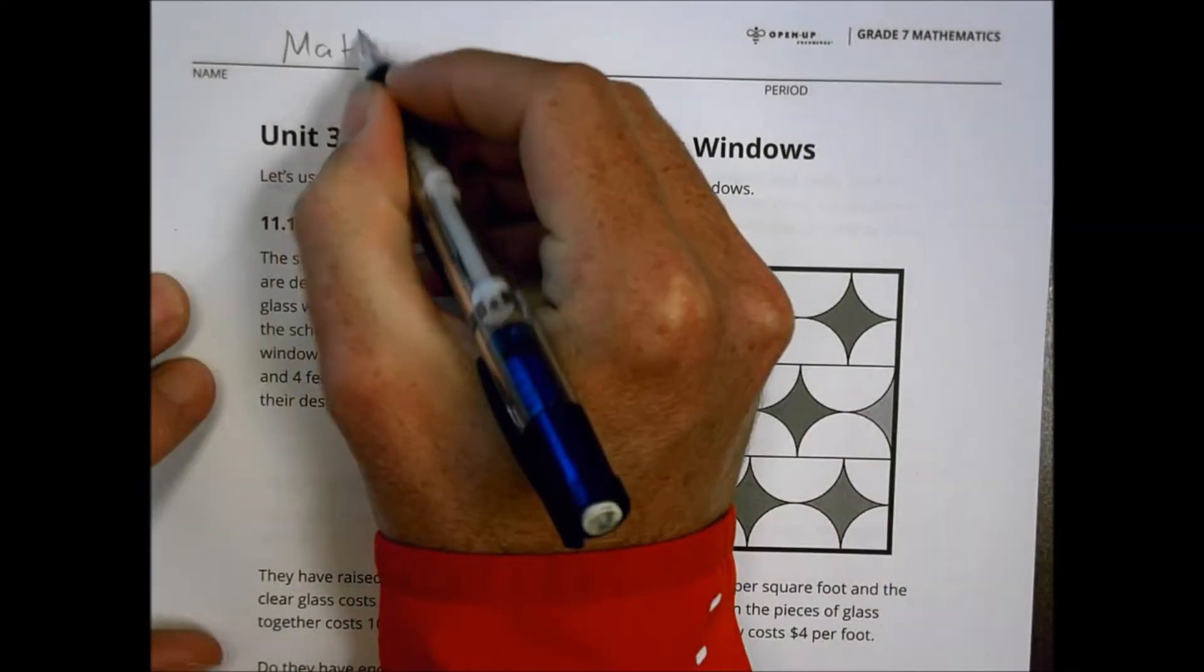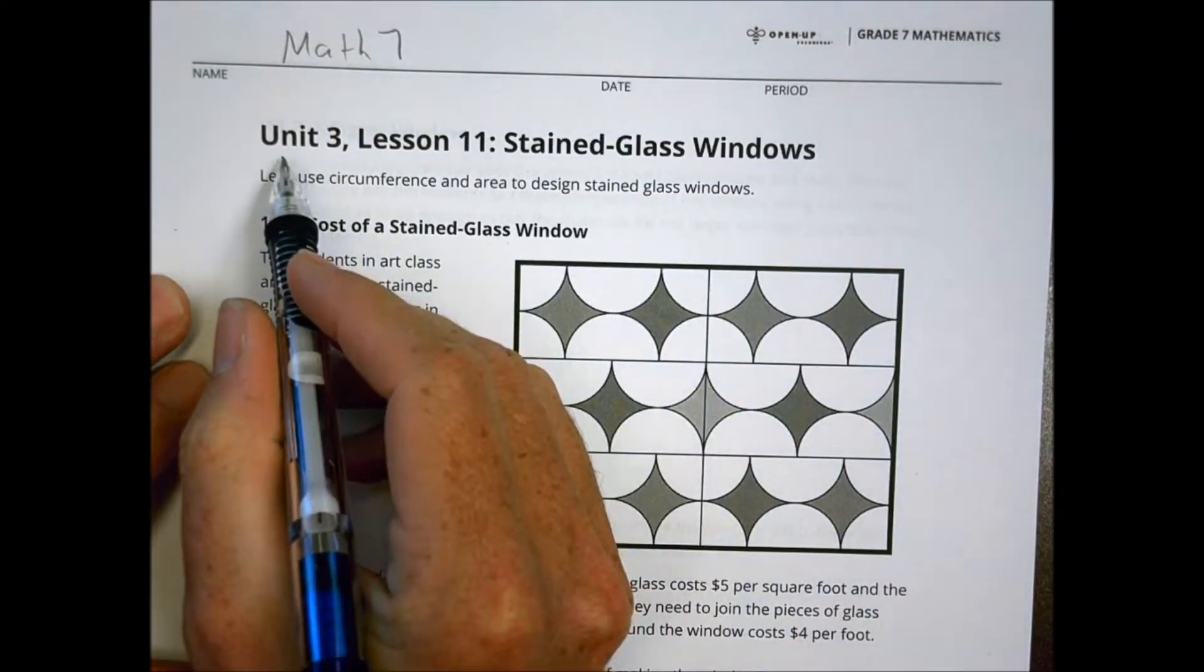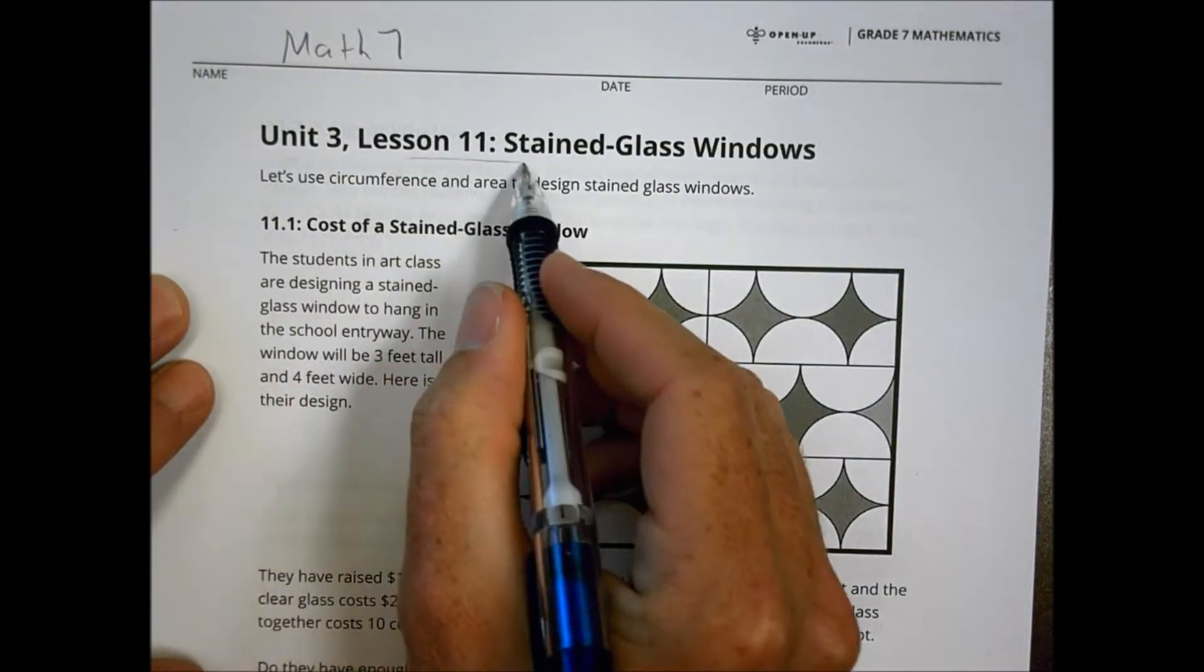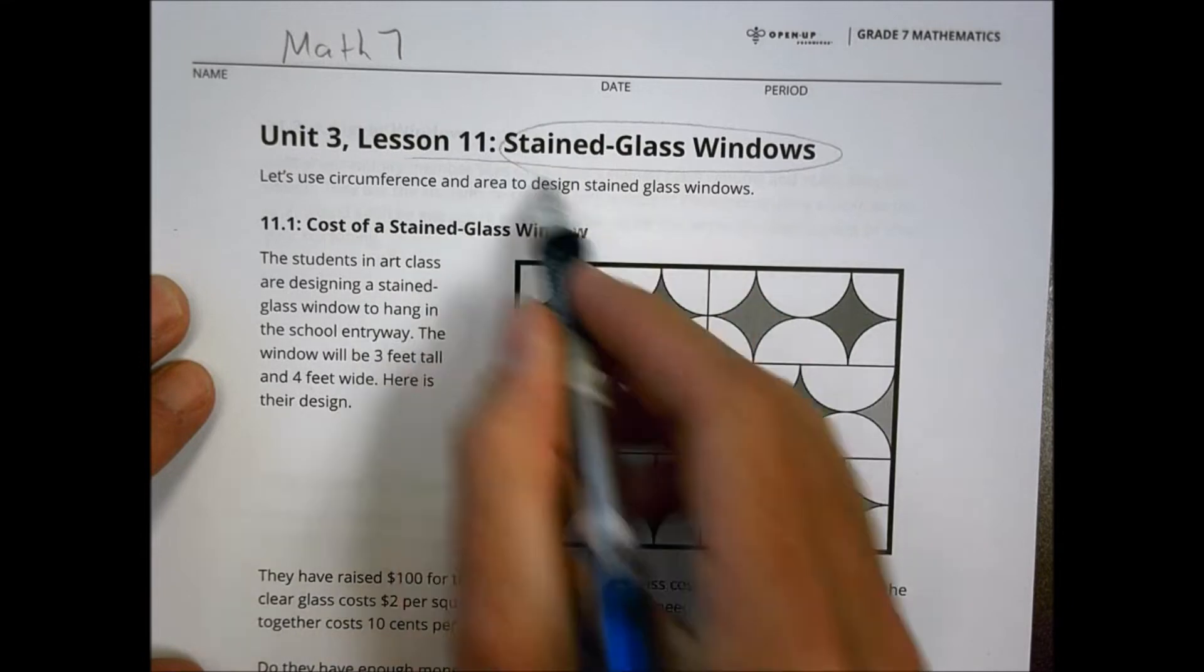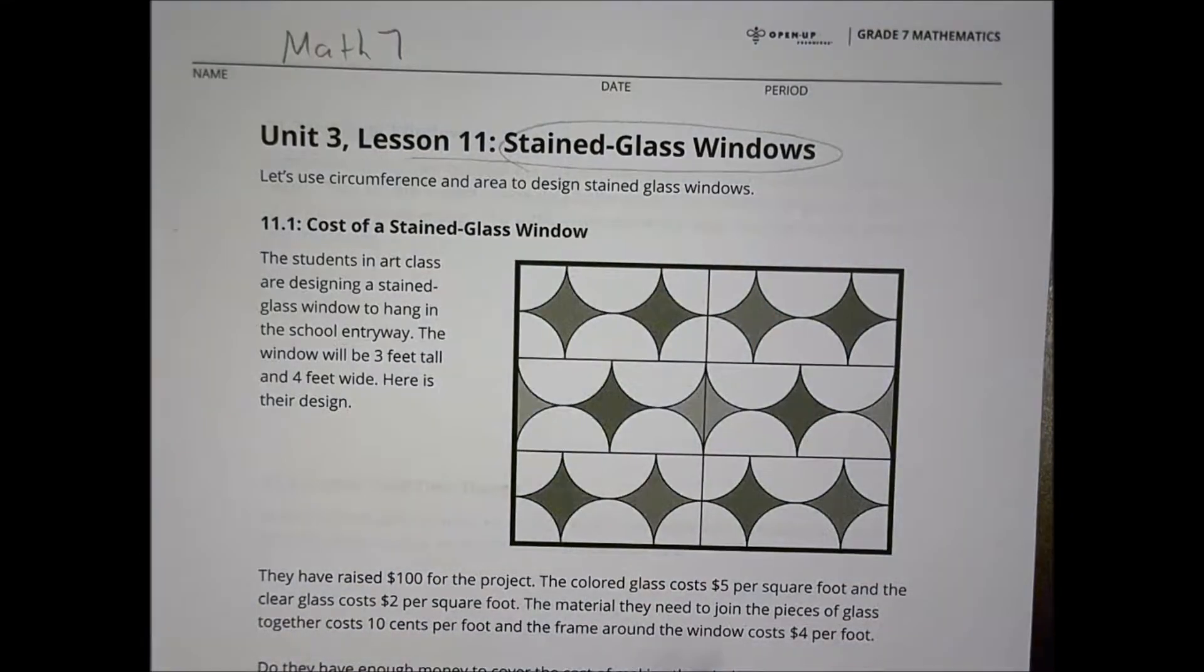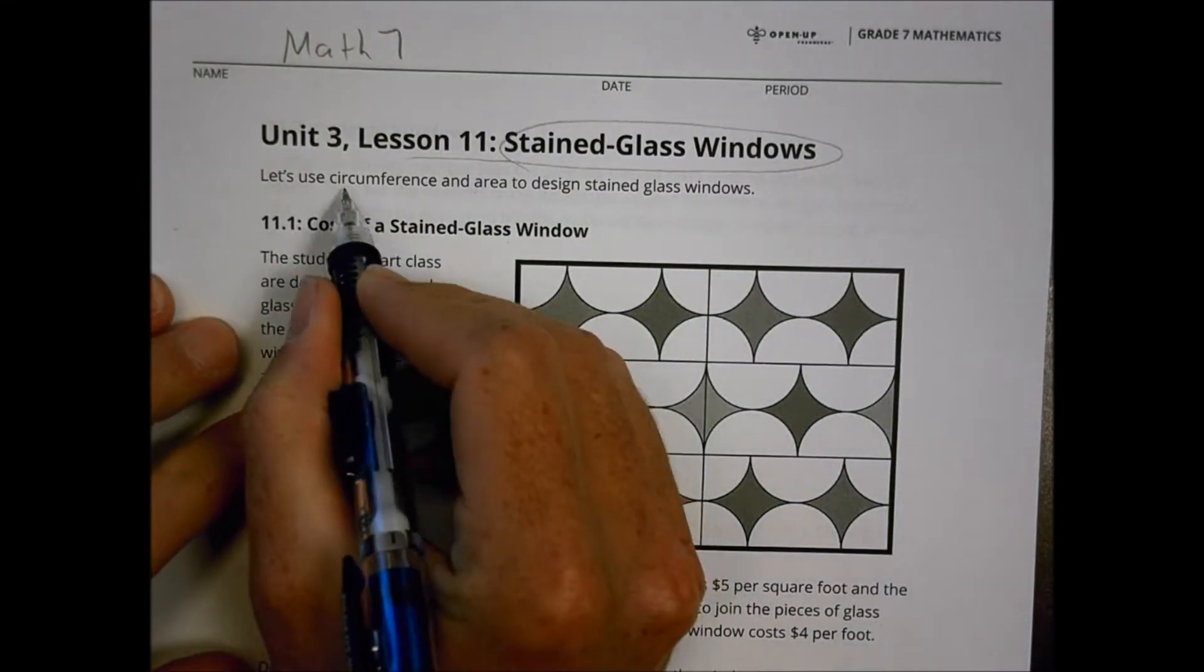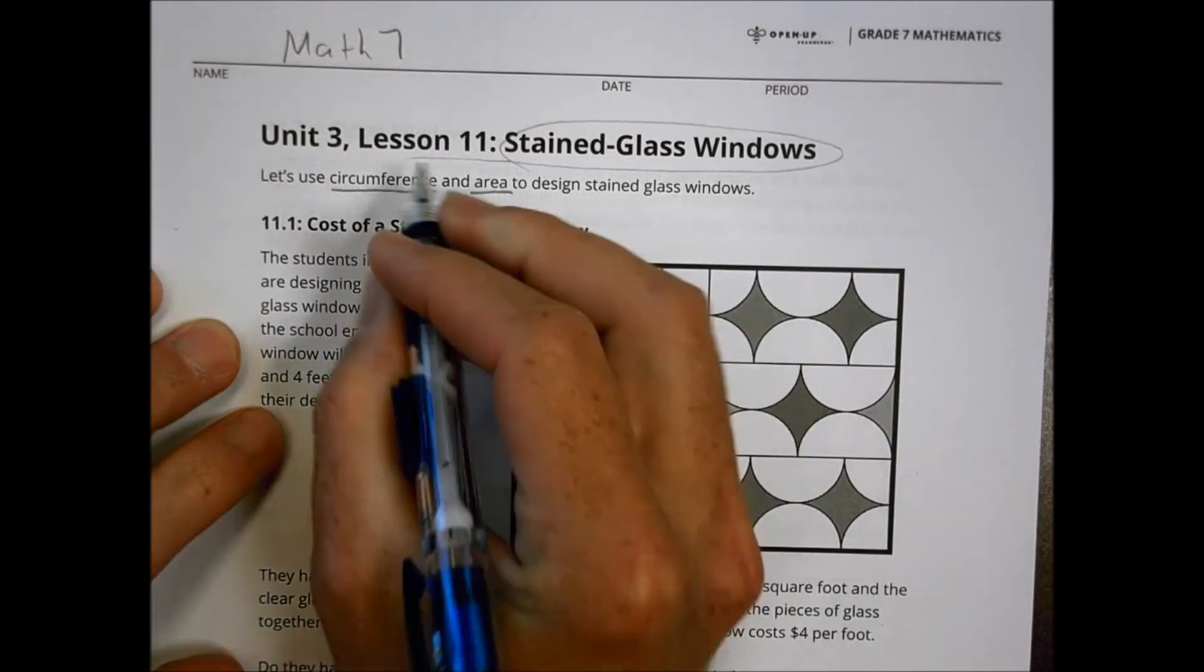All right, this is Math 7, and we're looking at Unit 3, Lesson 11, our last lesson for this unit called Stained Glass Windows. And so this lesson really pulls together everything we've been talking about, circumference and area.